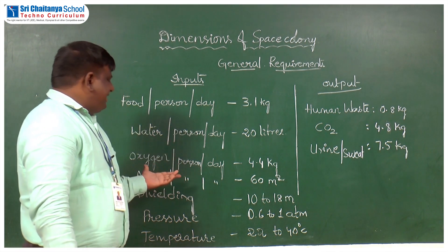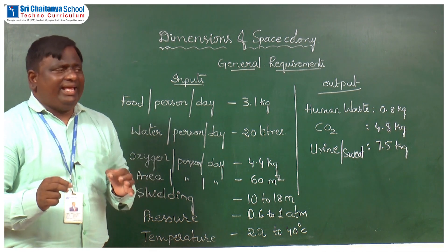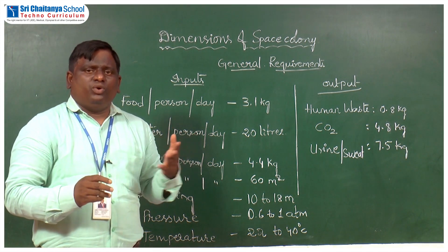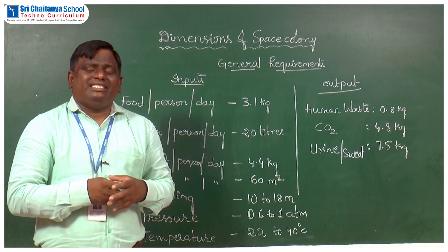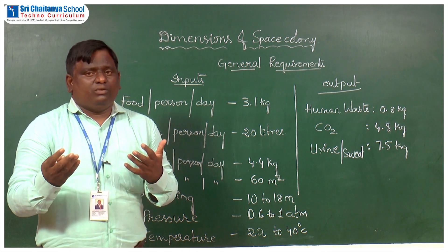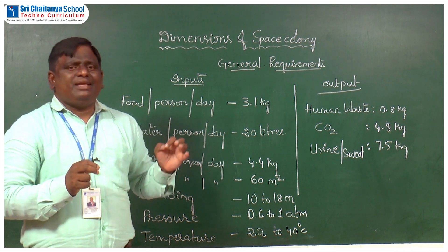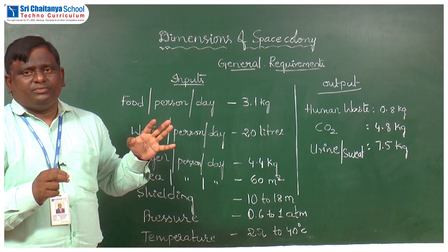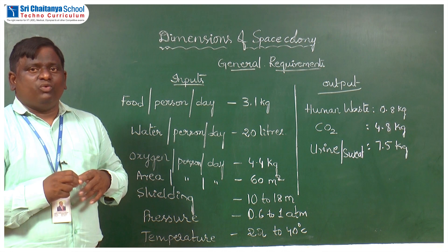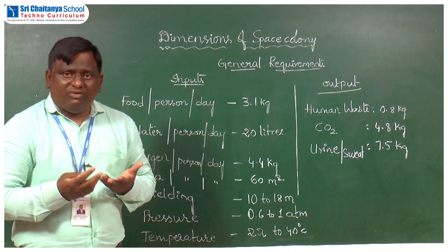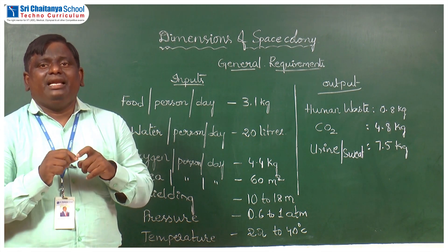The next important aspect is area. For a person to live happily, the minimum area required is 60 square meters. You can allot 40, 50, 70, or 80 square meters — if your space colony is big enough, you can allot 80, 100, or 150 square meters. But as a minimum, a common human being requires 60 square meters area to live happily, and this same area requirement should be adopted for our space colony or space hotel.